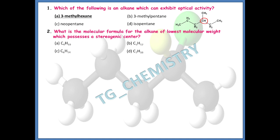The second question asks: what is the molecular formula for the alkane of lowest molecular weight which possesses a stereogenic center? There are different alkanes listed with different molecular formulas. The lowest molecular weight alkane having a stereogenic center should be option D, that is C7H16.